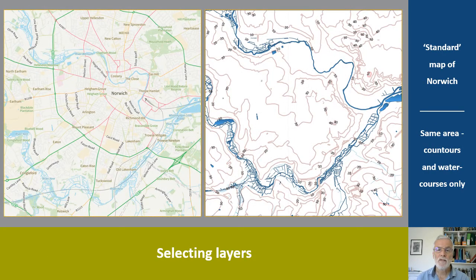Using vector data allows you to be selective in what you show. Here are two maps drawn from the same collection of data — in one case a fairly standard map, in the other just showing the contours and watercourses, which might be potentially useful if you wanted to show the nature of the land where settlement took place.